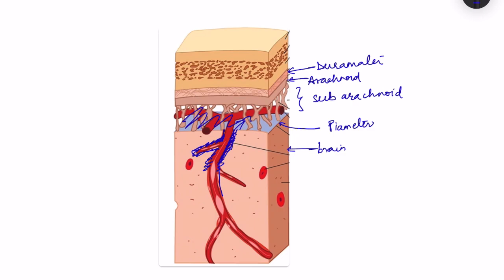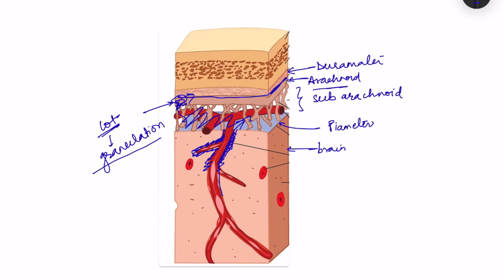Regarding absorption of CSF: in the arachnoid there are microscopic projections known as villi, and many villi combine together to form the arachnoid granulations. These granulations project into the subdural space where there are dural venous sinuses. From here the CSF is absorbed and enters into the dural venous sinuses via the arachnoid granulations, completing the cycle of CSF formation and absorption.